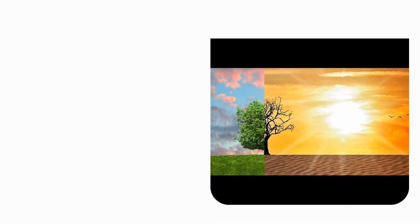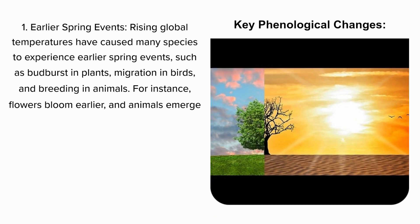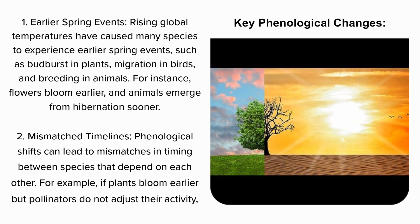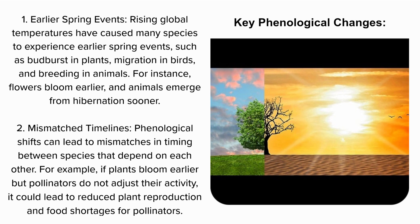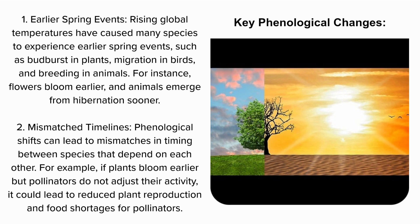Key Phenological Changes. 1. Earlier Spring Events: Rising global temperatures have caused many species to experience earlier spring events, such as budburst in plants, migration in birds, and breeding in animals. For instance, flowers bloom earlier and animals emerge from hibernation sooner.